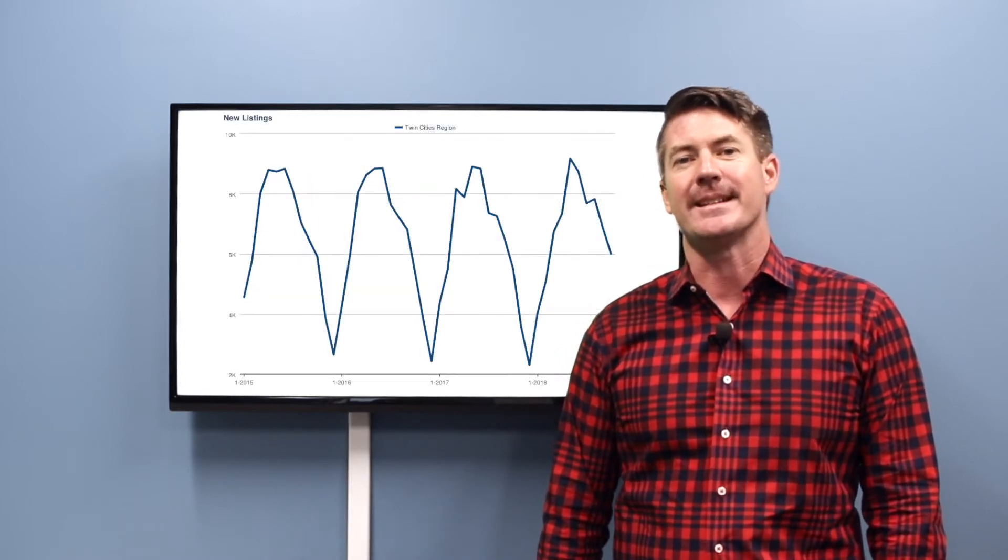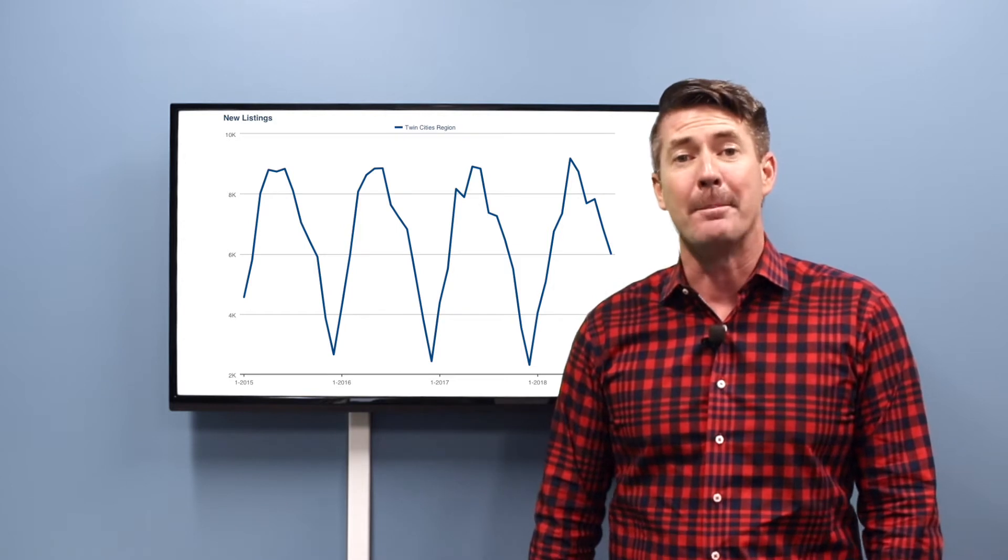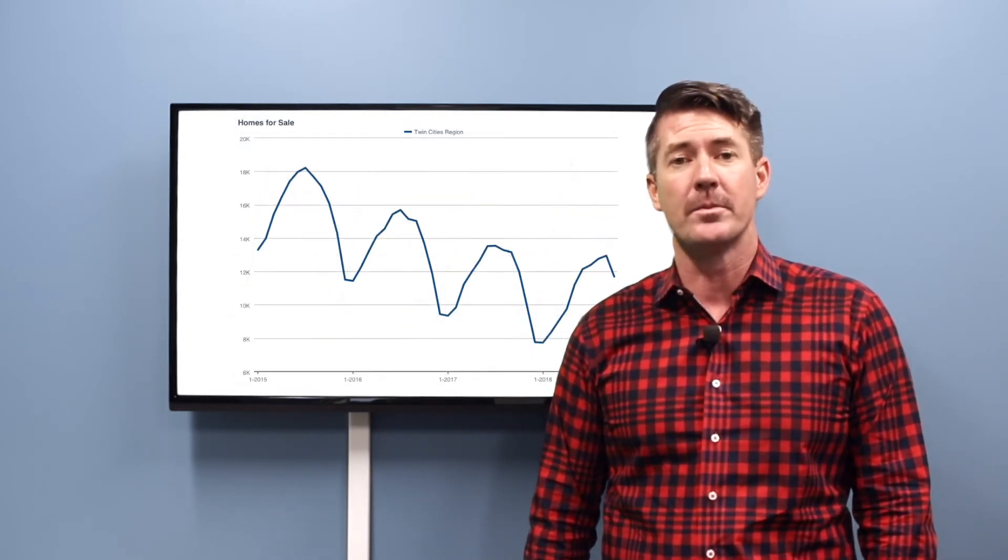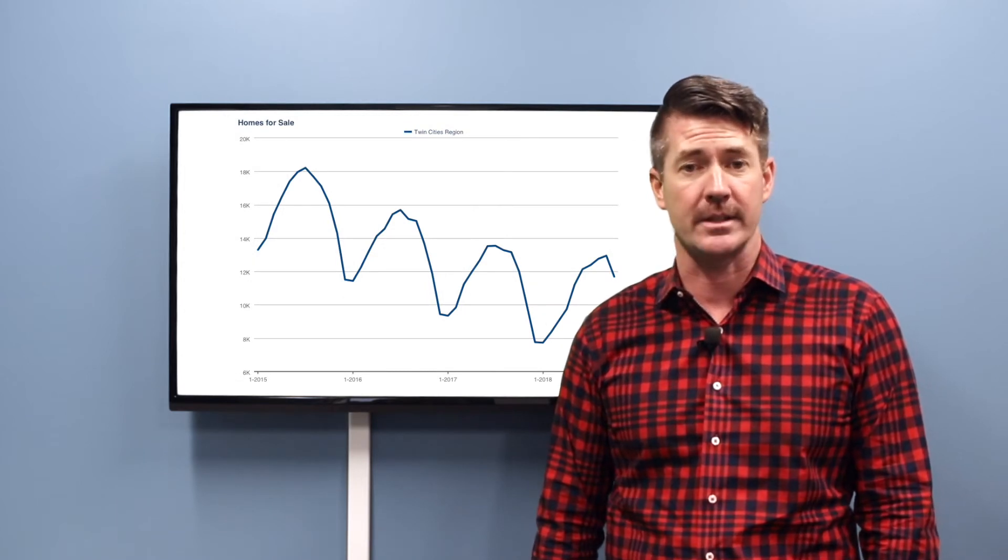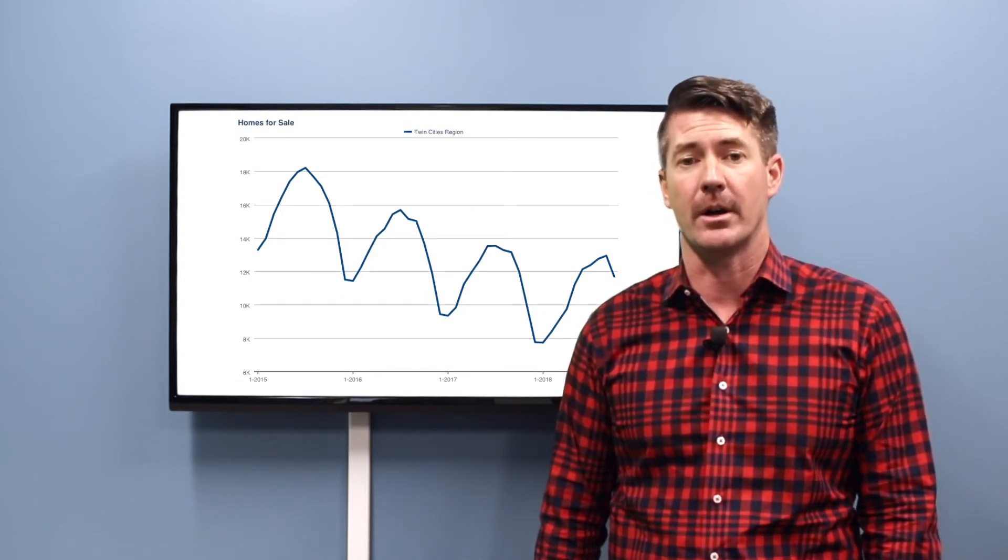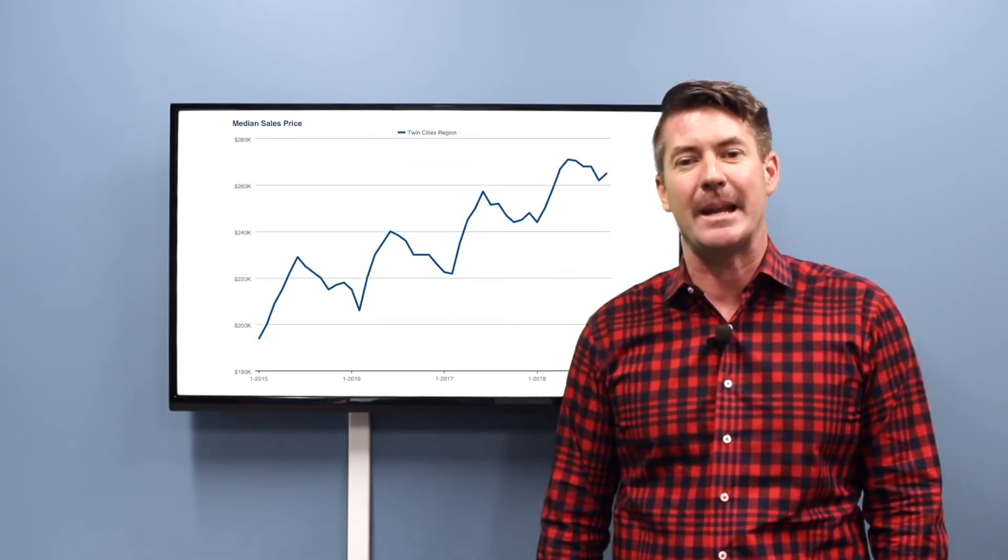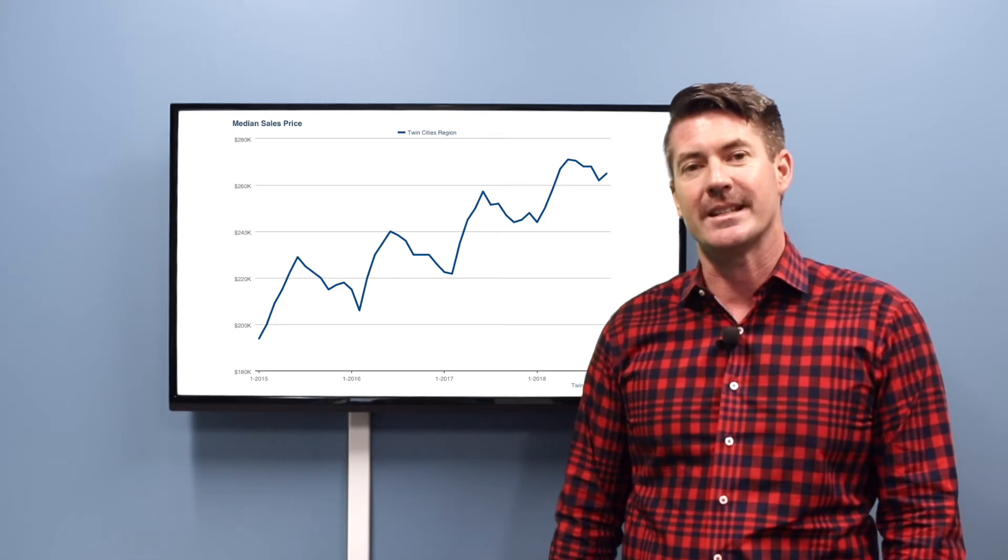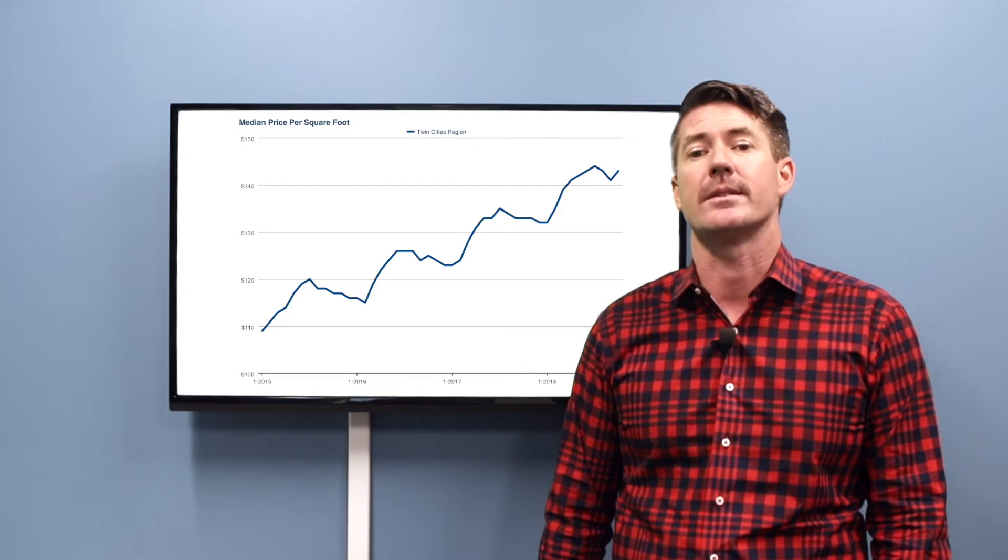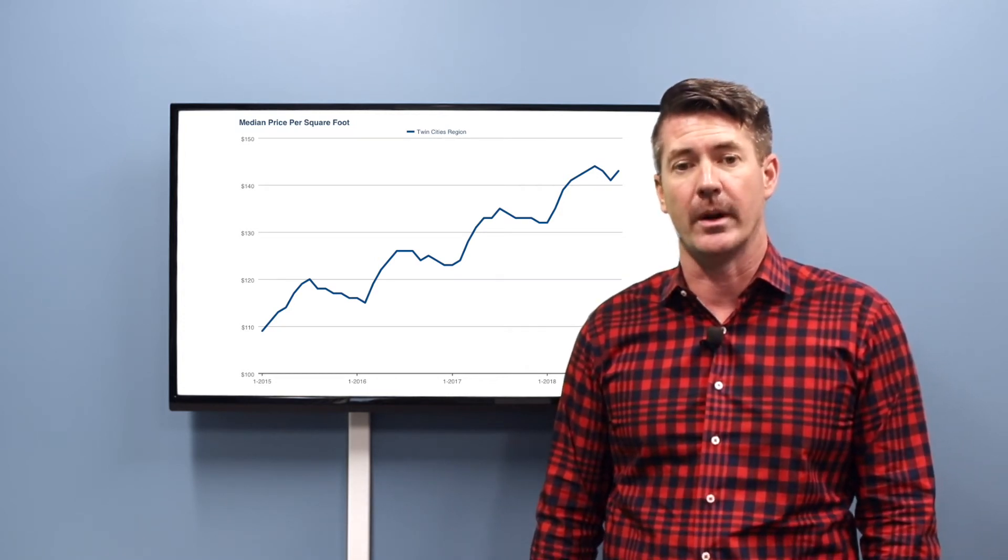The number of new listings hitting the market in October was 6,009 homes, up 9.2% over the previous year. The number of homes for sale decreased 2.4%. There's now 11,690 homes available on the market. The median sale price increased 8.6% to $265,000, while the dollars per square foot increased 7.5% to $143 per square foot.